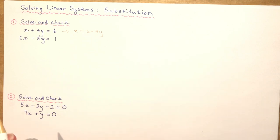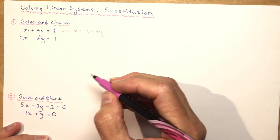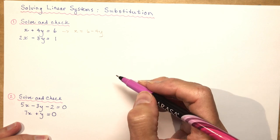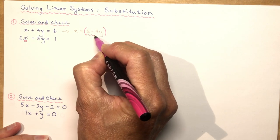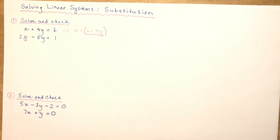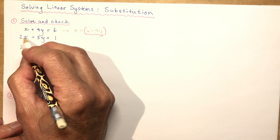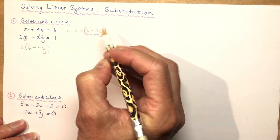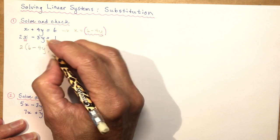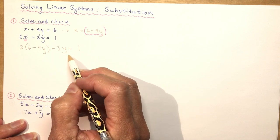Substitution means you put something in for something else — like in team sports when someone subs in for someone else. Here x equals 6 minus 4y, so wherever I see x in the other equation I sub in that expression. Always put a bracket where you're substituting because you'll need the distributive property to expand.